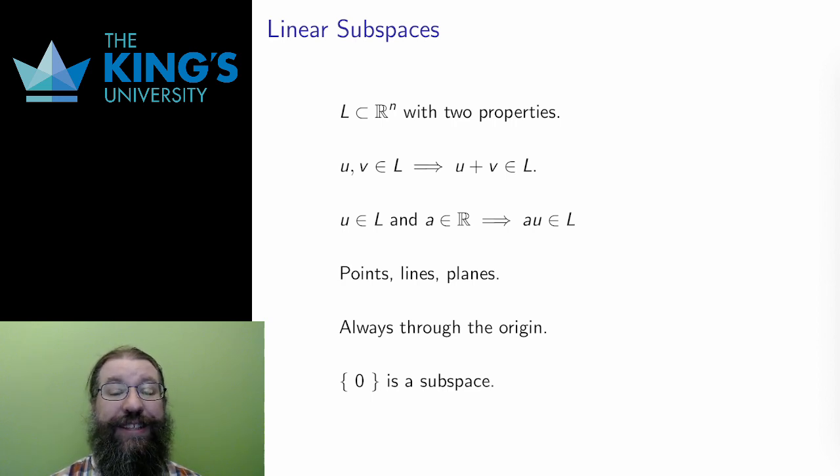The first definition is a linear subspace. A linear subspace is a subset L of some ℝⁿ with two properties. First, for any two vectors in the subset, the sum of the two vectors must also be in the subset. Second, for any vector u in the subset, and for any scalar whatsoever a, the multiple au must also be in the set.